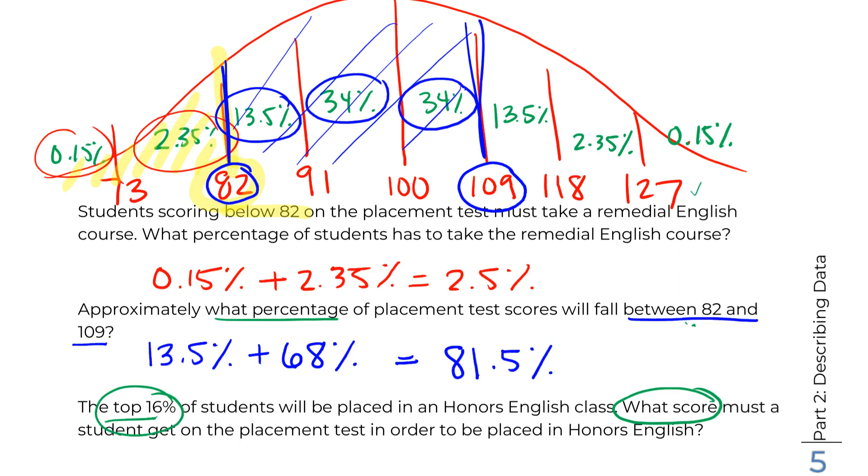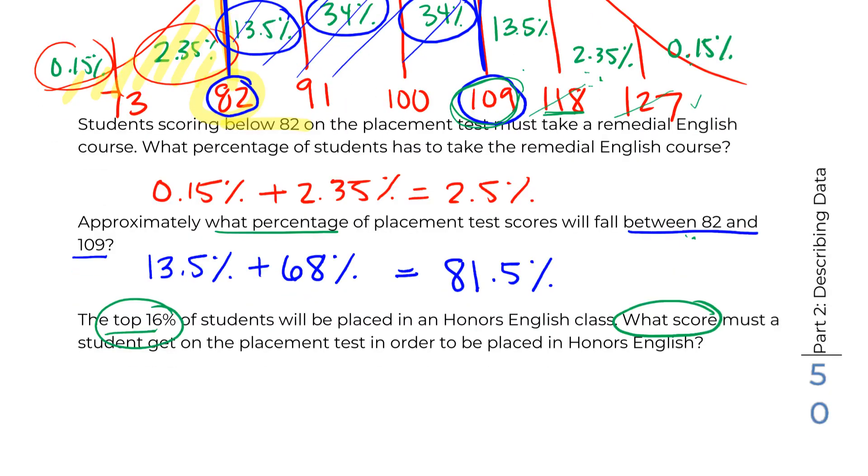127, well, that's only 0.15. That's a really tough cutoff. So that's not it. 118, that's these two added together. That's 2.5. That's not enough. 109, the 2.5 plus the 13.5, that's going to get us what we want. So 109 is our answer. So that's how you can handle those ones going in the other direction.